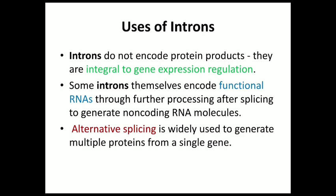Introns are removed through RNA splicing. The mechanism of removal of introns from a gene before it is translated is called splicing. This mechanism involves removing introns and, after their removal, rejoining the exons — the connection of exons by covalent bonds — and this is called splicing.